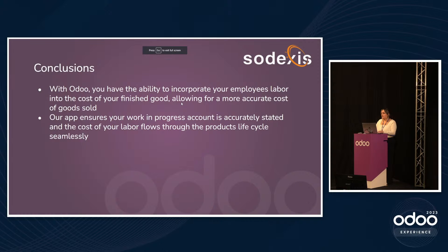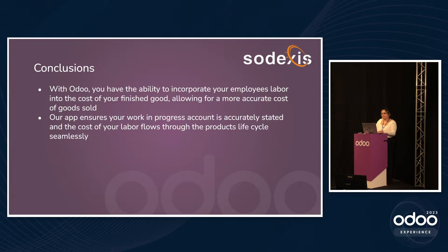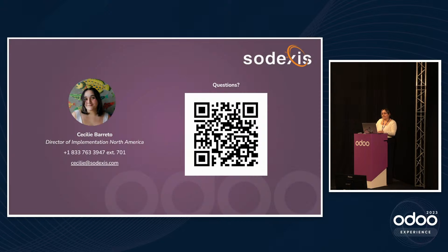To conclude: with Odoo, you have the ability to incorporate your employees' labor into the cost of your finished goods, allowing for a more accurate cost of goods sold. Our app ensures that your work in progress account is accurately stated and that the cost of your labor flows through the product's lifecycle seamlessly. And that is it for my demo — I'll take any questions.